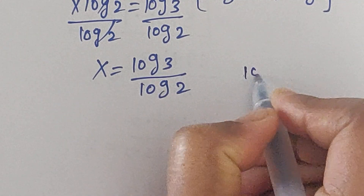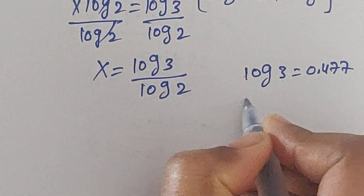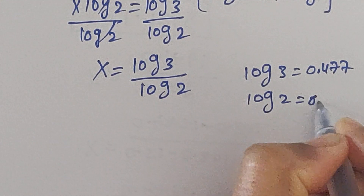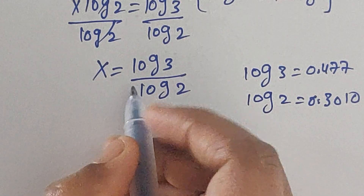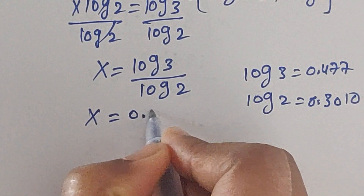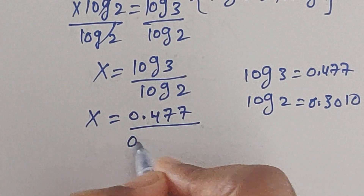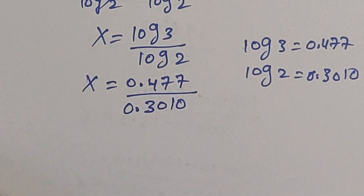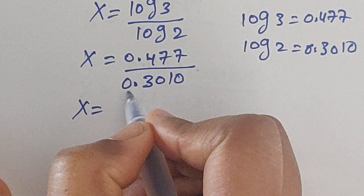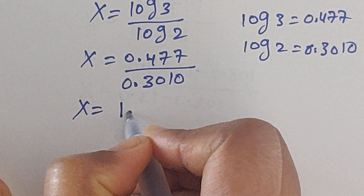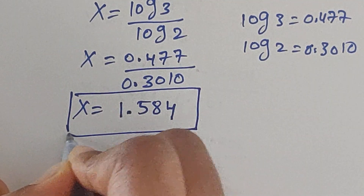The value of log 3 is 0.477 and the value of log 2 is 0.3010. Substituting these values, x equals 0.477 divided by 0.3010, which equals 1.584. So this is the value of x.